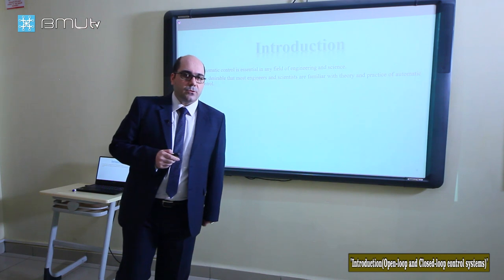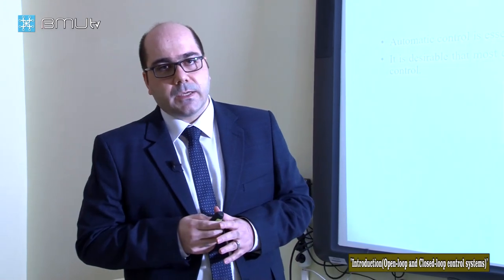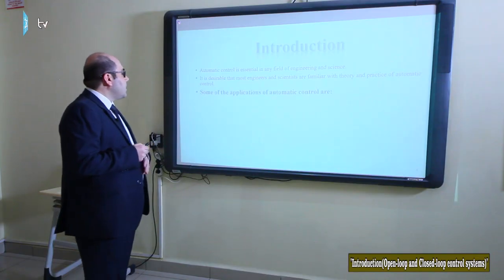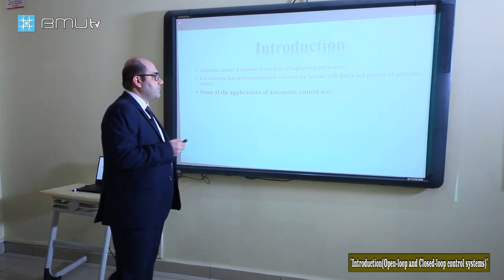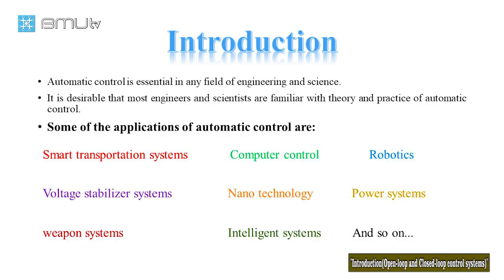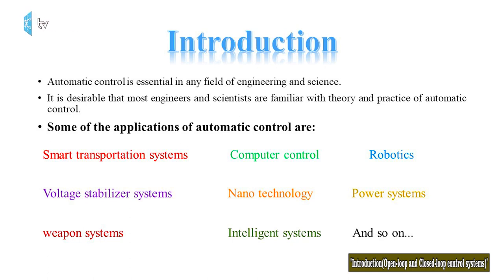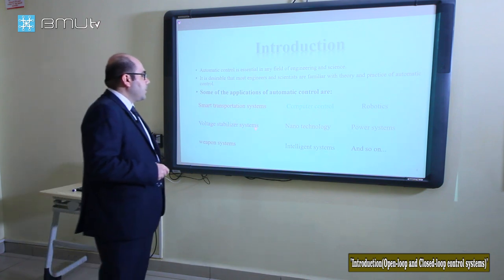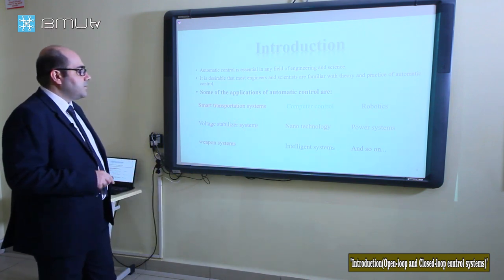The automatic control system is an important topic in different fields of engineering and science. Some applications of automatic controls include smart transportation systems, computer control, robotics, voltage stabilizer systems, nanotechnology, power systems, weapons systems, intelligence systems, and so on. Automatic controls are used across many areas of engineering and science.